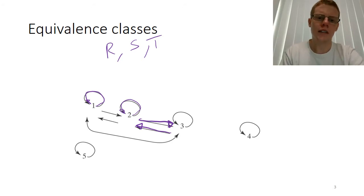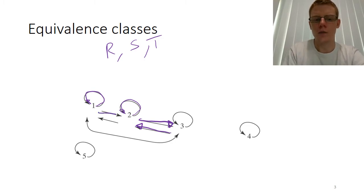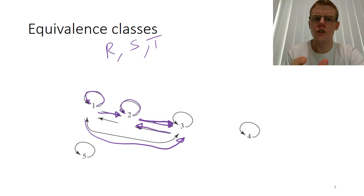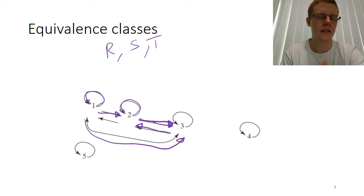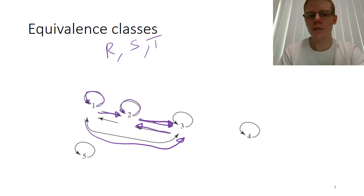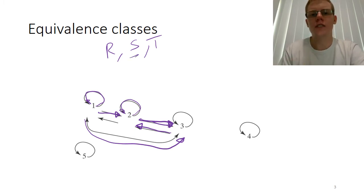The transitive property says that if we have 1 related to 2 and 2 related to 3, then we have to have 1 related to 3. This captures a notion of being the same or being equivalent. If 1 is the same as 2 and 2 is the same as 3, then obviously 1 is the same as 3. It doesn't make sense for 1 to be the same as 2 and 2 not to be the same as 1 — that's why we need symmetry. And obviously any element is the same as itself, which is why we need reflexivity.